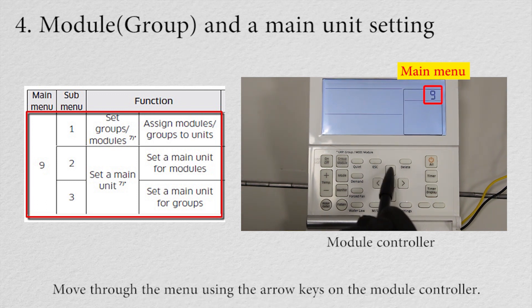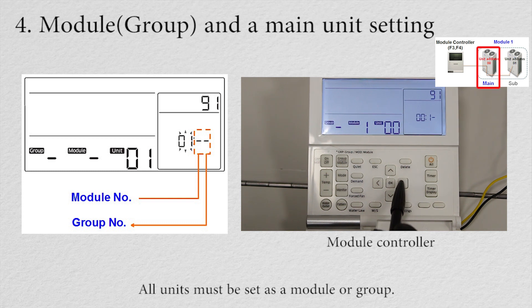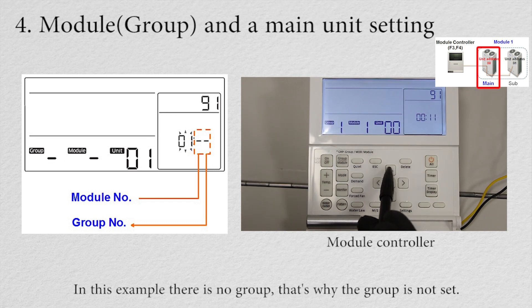Move through the menu using the arrow keys on the module controller. All units must be set as a module or group. In this example, there is no group, that's why the group is not set.